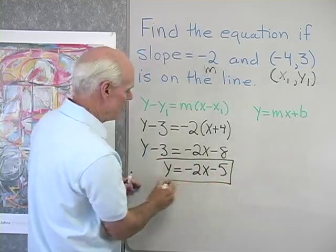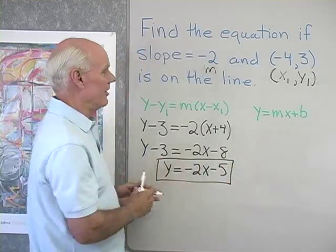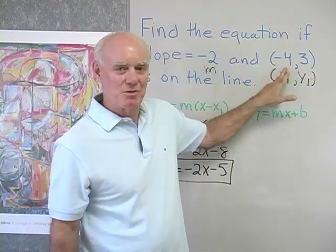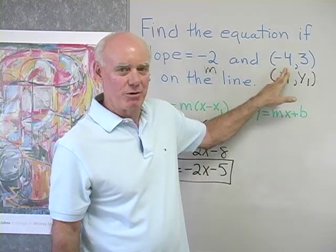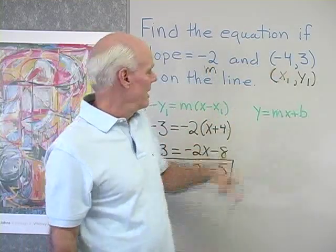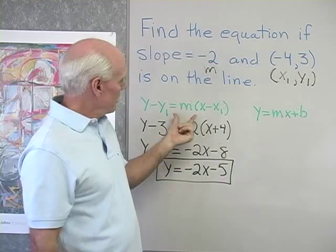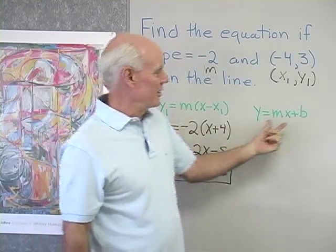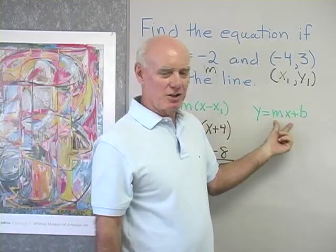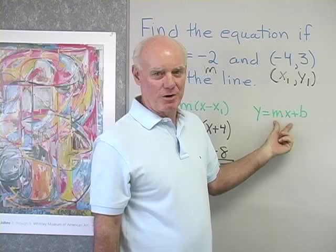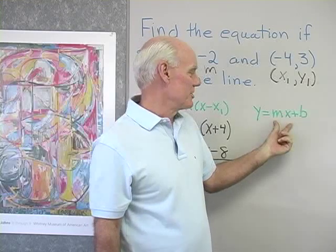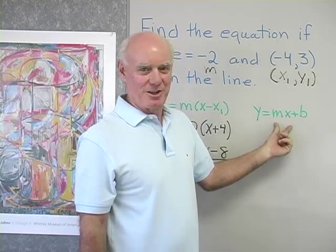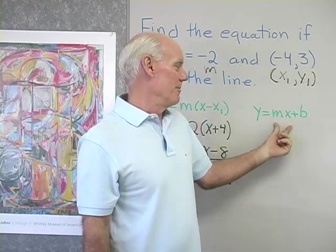So there's the equation of that line with a slope of negative two passing through the point (-4, 3). Now some people don't like to memorize the point-slope form — they prefer to use the slope-intercept form every time. So let's do the same problem again using that form.